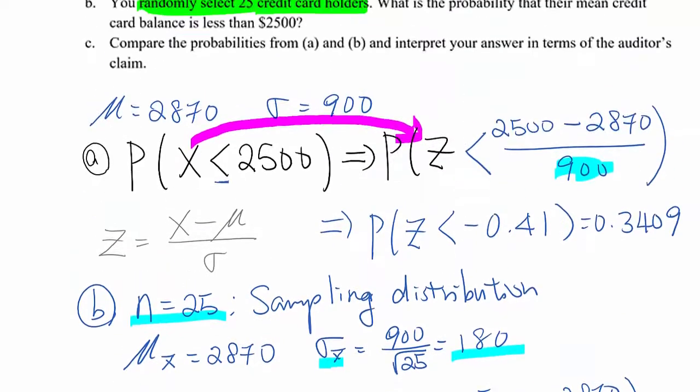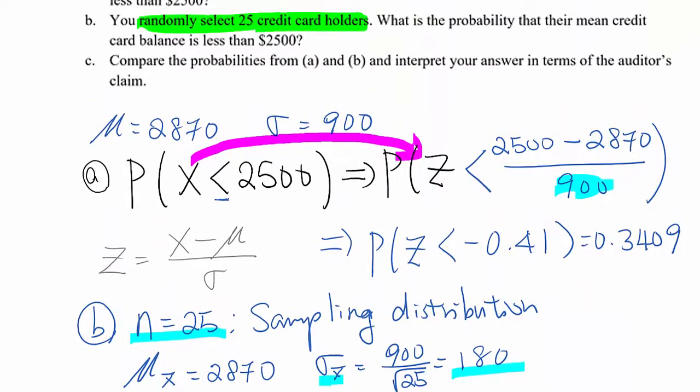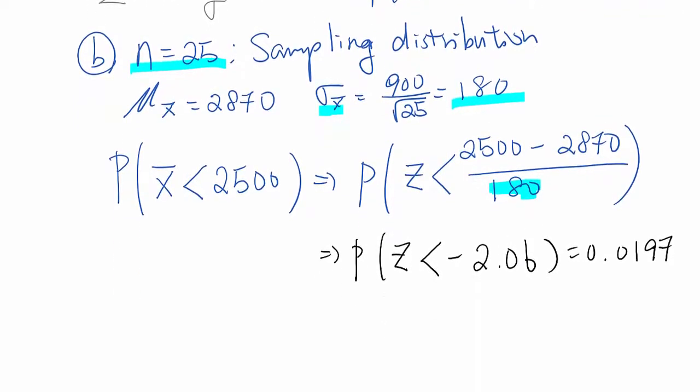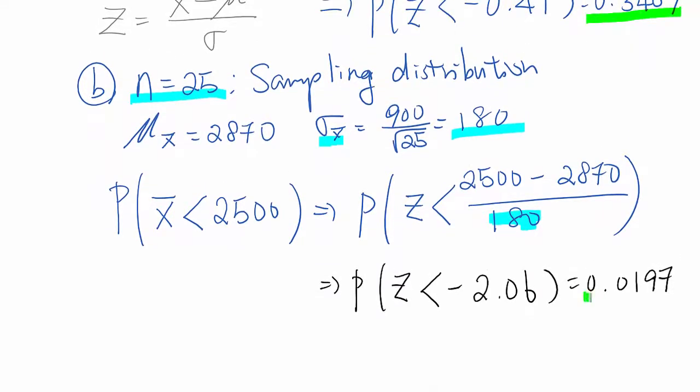Now, look at the question c. Compare the probabilities from a and b and interpret your answer in terms of the auditor's claim. So, from the a answer, we got the probability value 0.3409. But after sampling distribution, we got 0.0197.